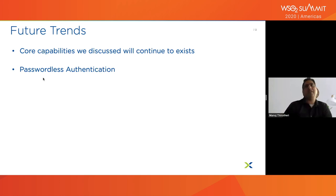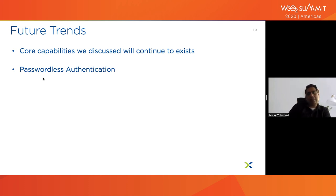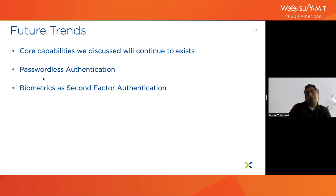During registration, your private key is stored on the client side and the public key with the relying party — they exchange signed information for validation. You can add biometrics as a second factor on top of this. SMS and OTP used to dominate, but SIM card swapping attacks have exposed their weaknesses. That's where biometric and behavioral authentication become important for stronger second-factor protection.